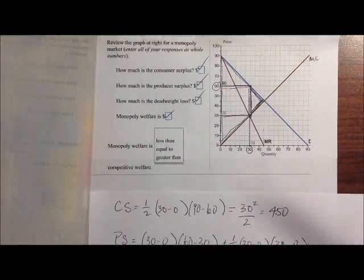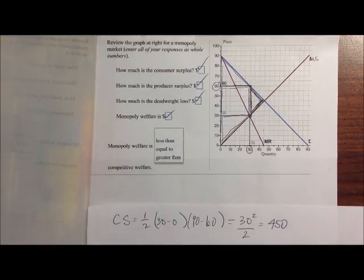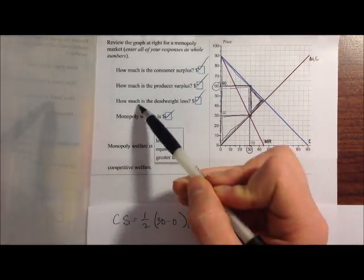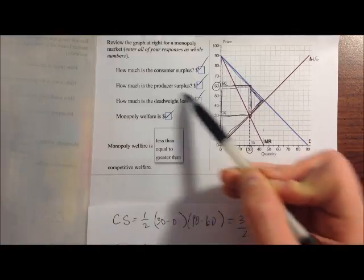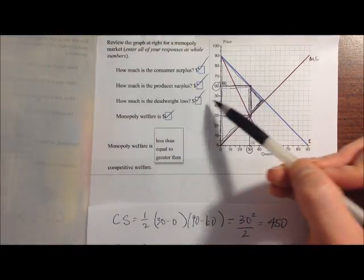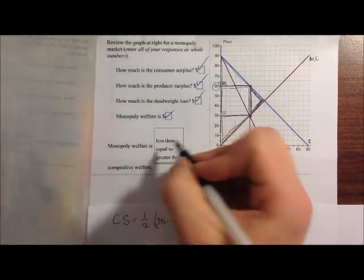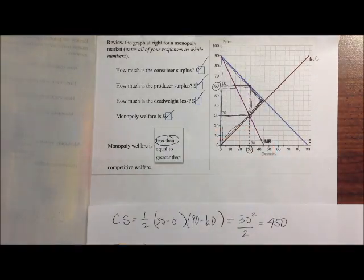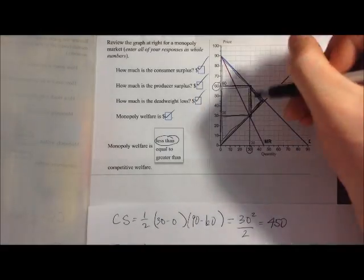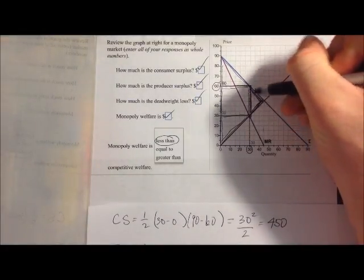And then the last thing we want to know is, is monopoly welfare less than, equal to, or greater than competitive welfare? And just by the fact that there is a deadweight loss, that tells us that welfare is lower in this market than it would be under perfect competition. So monopoly welfare has to be less than, and in particular, it's less than the competitive welfare by exactly the amount of the deadweight loss.